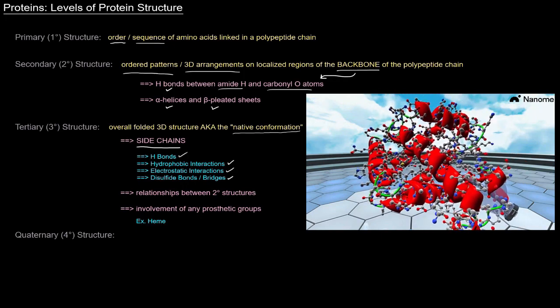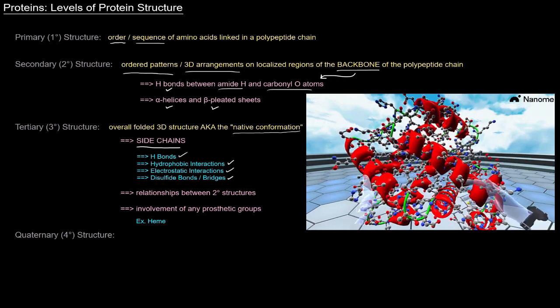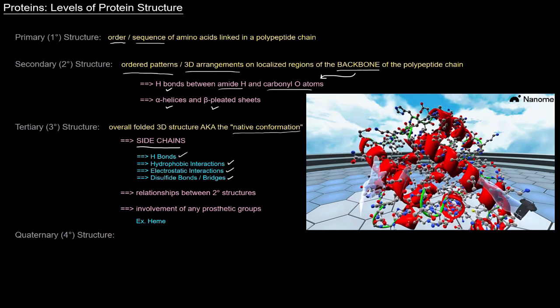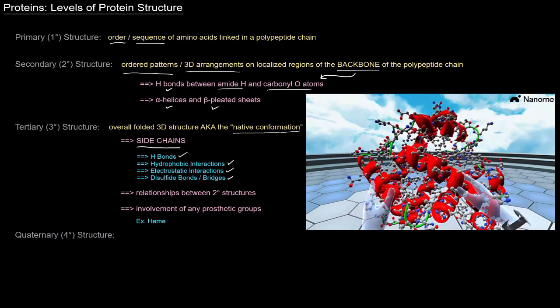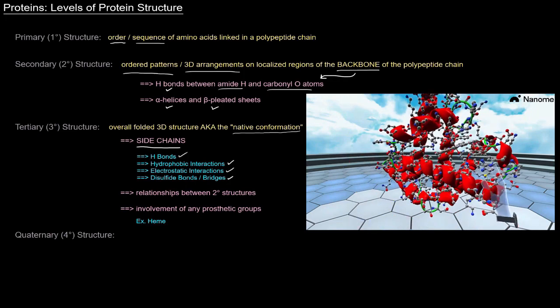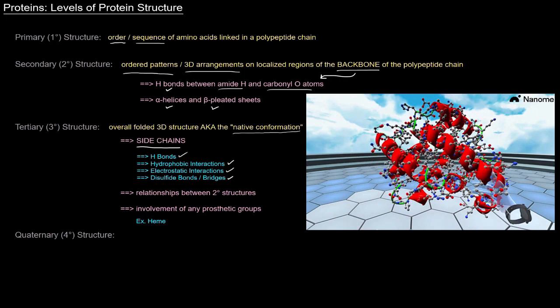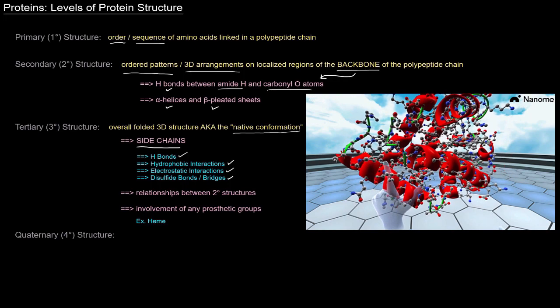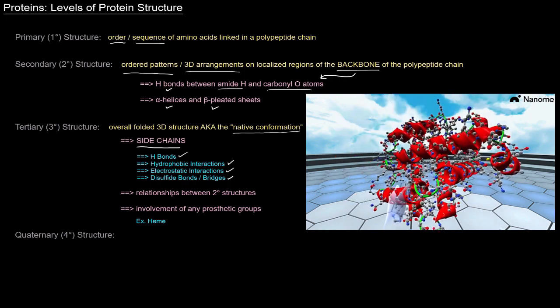Tertiary structure also refers to the relationships between secondary structures. So, if there are multiple alpha helices, multiple beta pleated sheets, and they're all interacting one way or another, as part of a full 3D structure, that's included in, is referred to and described by tertiary structure.